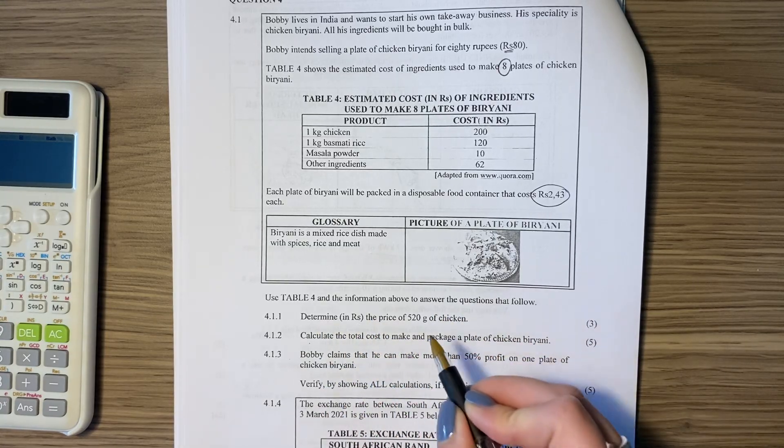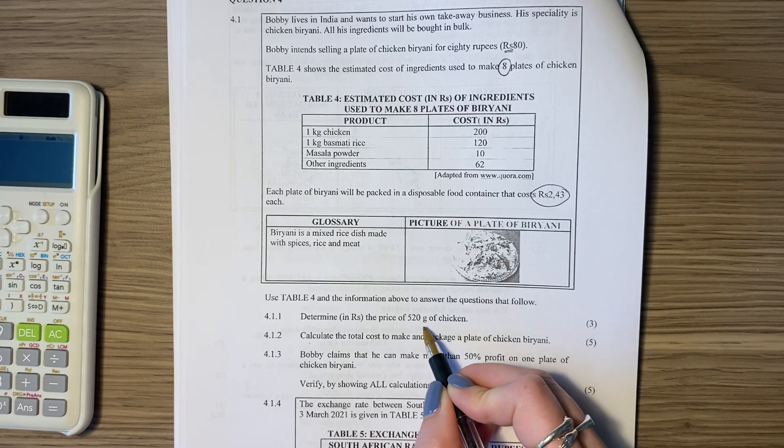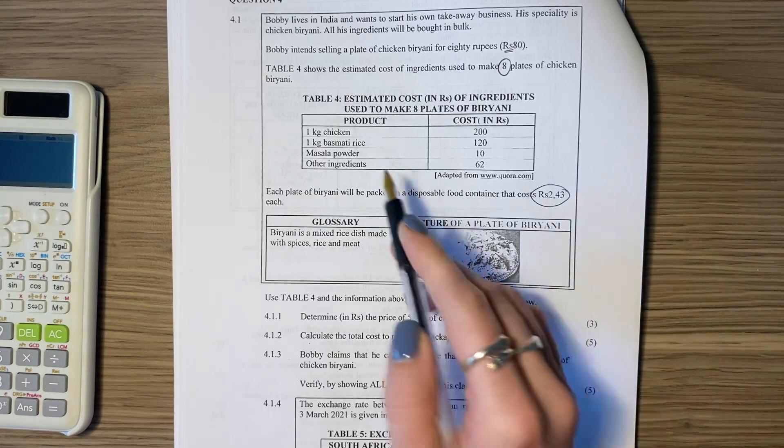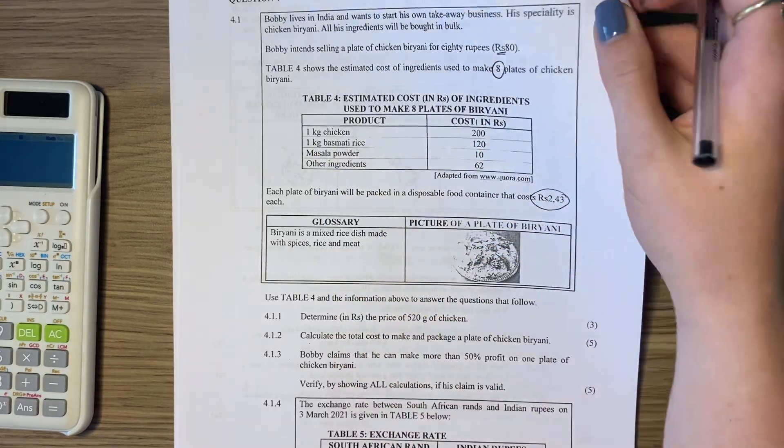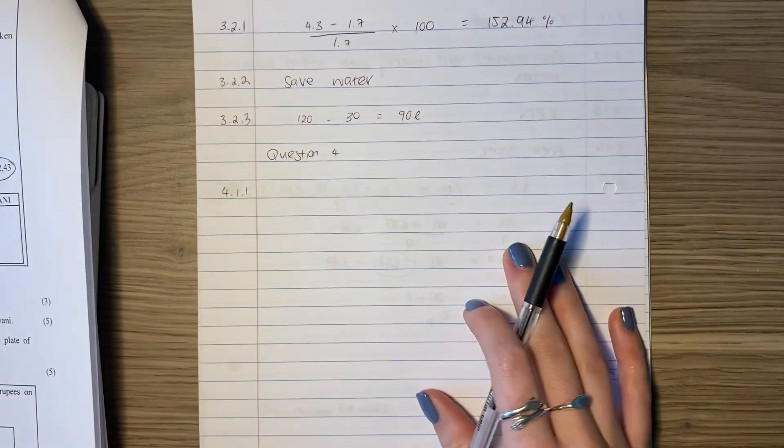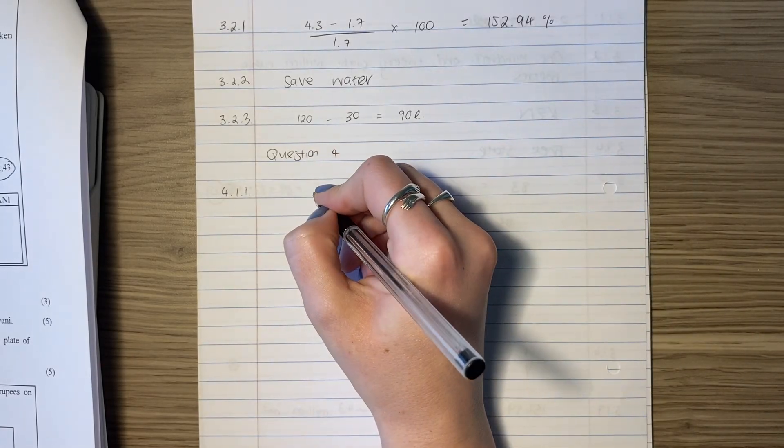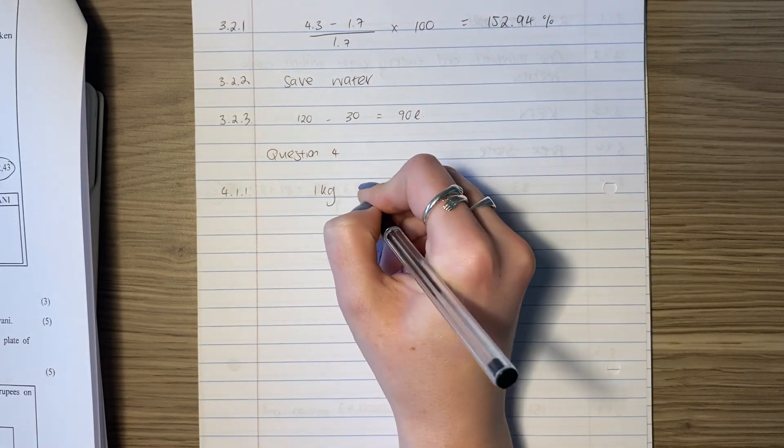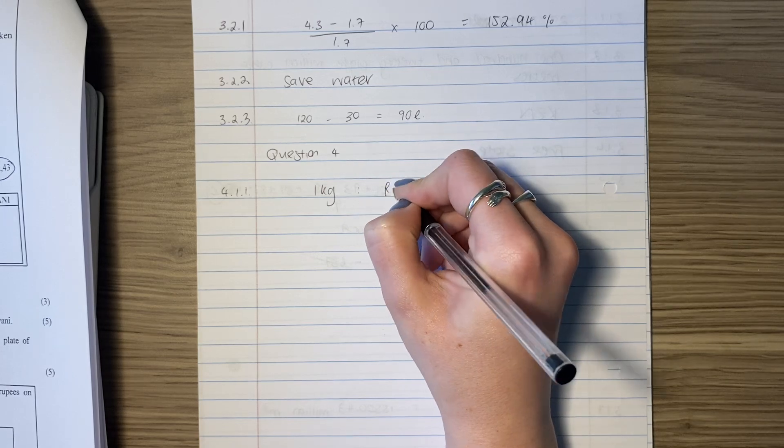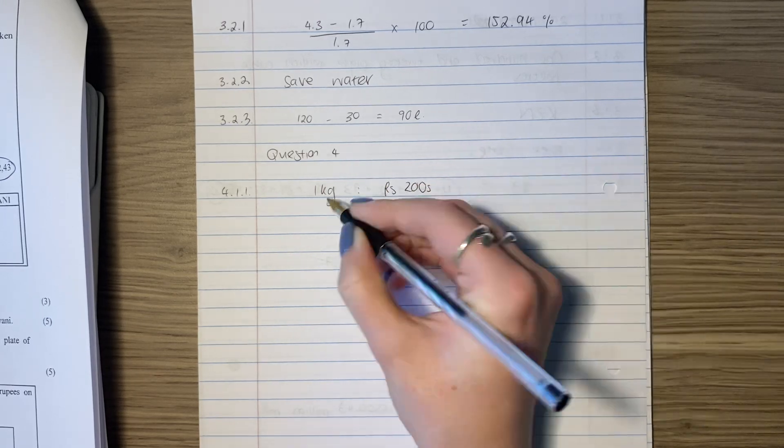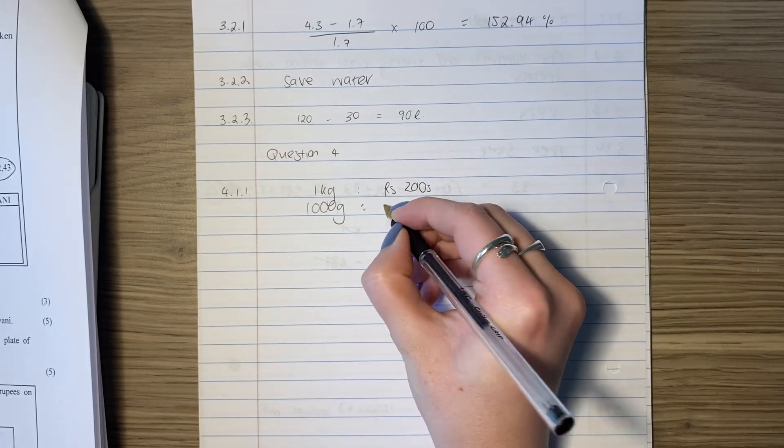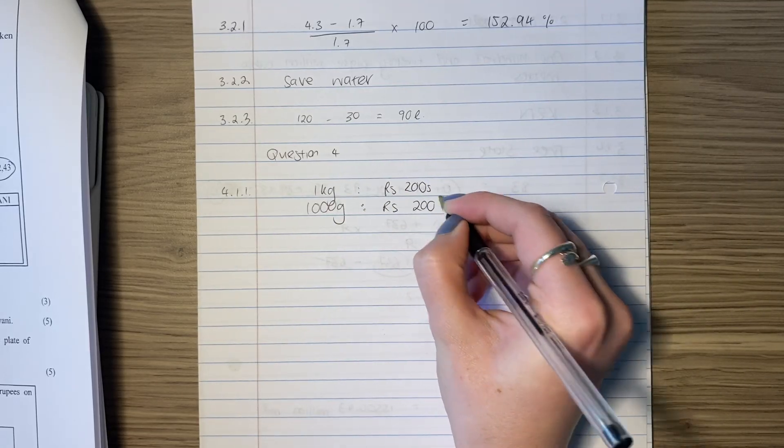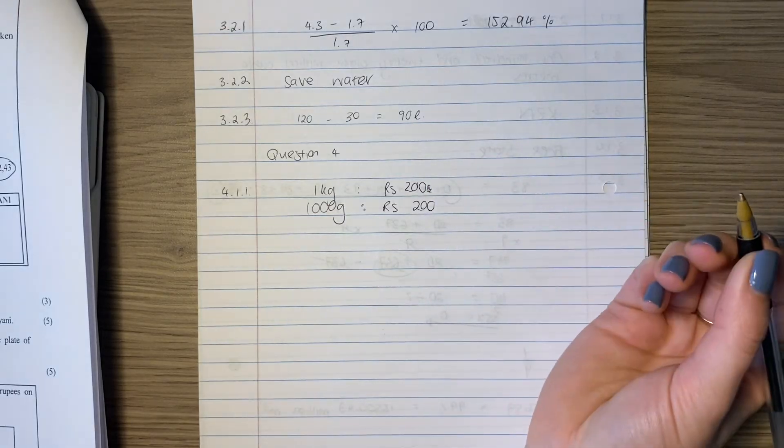Determine, in rupees, the price of 520 grams of chicken. Here it tells you 1 kg of chicken equals 200 rupees. Let's do a little bit of work. So we know that 1 kg is going to be 200 rupees. Let's convert this into grams first. How many grams are there in a kg? You should know this guys. 1000 grams.